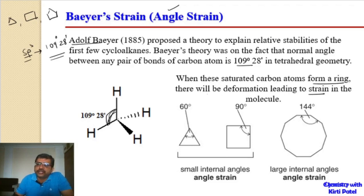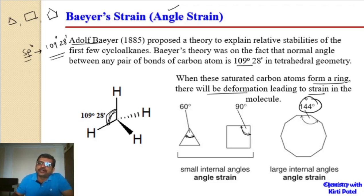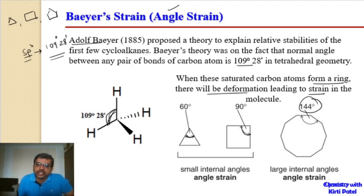When saturated carbon atoms form a ring, deformation leads to strain. For example, in cyclopropane the internal bond angle is 60 degrees; in cyclobutane it is 90 degrees; and for larger ring sizes of 8, 9, or 10 members, the angle is larger than 109 degrees 28 minutes. Whether the angle is contracted or expanded, both ways strain is produced — this is called angle strain or Baeyer strain.